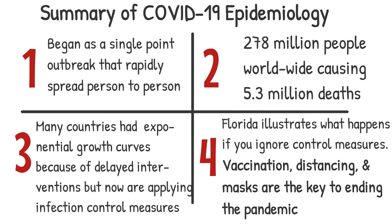The state of Florida serves as an example of what not to do. State legislators have passed laws that prohibit mask and vaccine mandates. As a consequence, the Omicron variant is spreading rapidly and promises to overwhelm Florida's, as well as many other states', health delivery systems. A third vaccine shot, combined with social distancing, avoiding closed public spaces, and wearing N95 masks, will be critical for controlling this fourth surge.